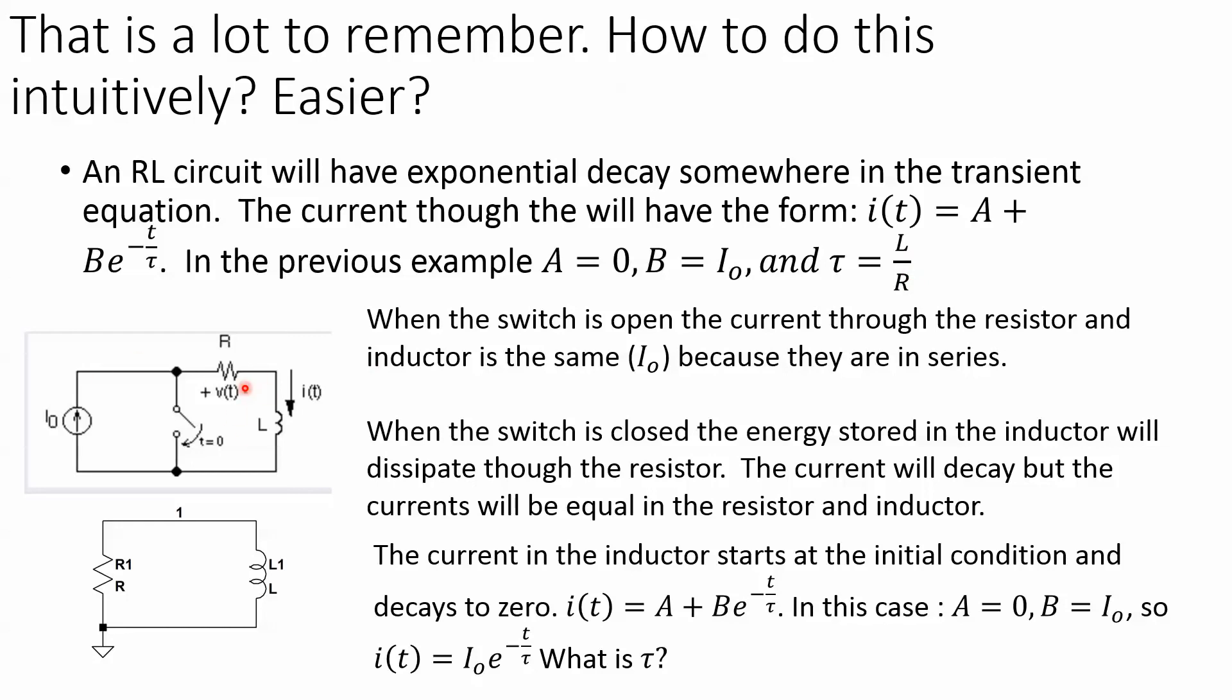In the previous example, A just equaled zero and B equaled I_0, and tau equaled the inductance divided by the resistance. So here we have an EE 101 problem where we have all this current going through, and then the switch is closed, so all the current shunts through that switch. And then what we have is the energy here needs to dissipate, which we would get here.